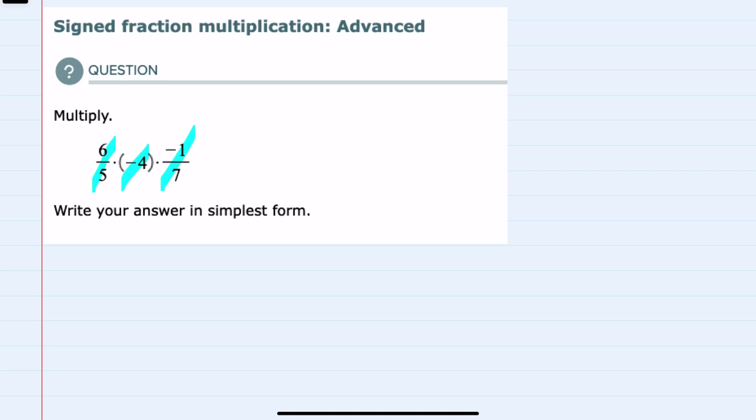it would be helpful to rewrite this as three fractions being multiplied, and where possible when I rewrite, I'll be sure that any of the signs, for example the negative 4,